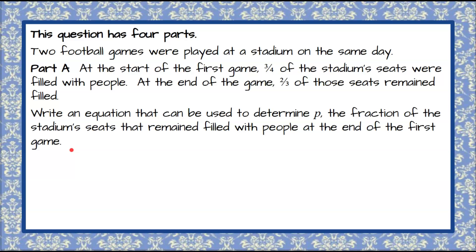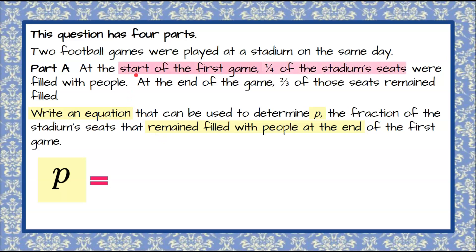Welcome back. So we want to write an equation to find P. I'm going to start by writing my variable and an equal sign to start my equation. An equation must have an equal sign — it's a statement of equality, and we want to know what P is equivalent to. So now we're going to go back to what our problem started with: at the start of the first game, three-fourths of the stadium seats were filled with people.